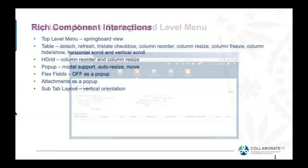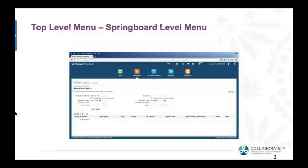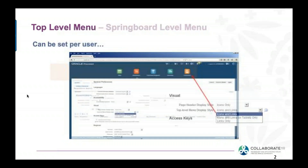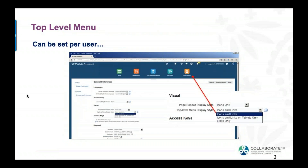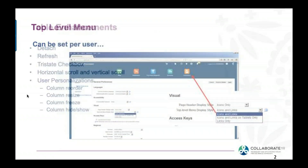This is your springboard menu. You'll see at the top your colorful icons, which is very cool. You can turn those on and off — you can do icons and links, or just icons. It's up to you. These replace those little tabs that you may see today.